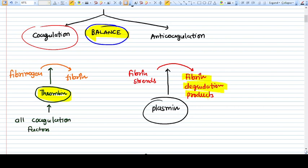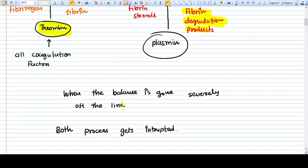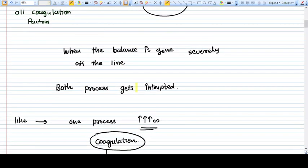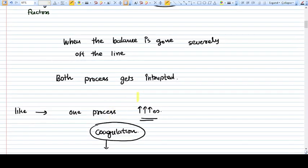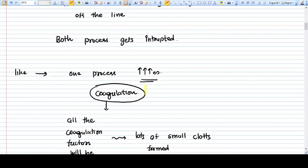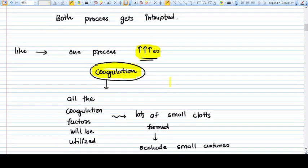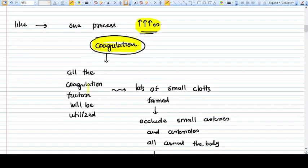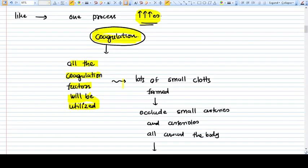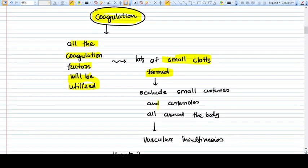When the balance is severely off the line, both processes get interrupted. Like one process increases so much - let's say coagulation. When coagulation is so much higher, all the coagulation factors will be utilized. When there's such a higher amount of coagulation going on, lots of small clots will be formed and they will occlude the small arteries and arterioles all around the body.